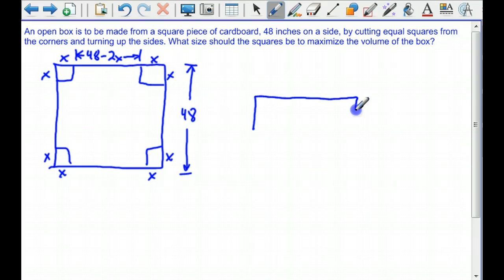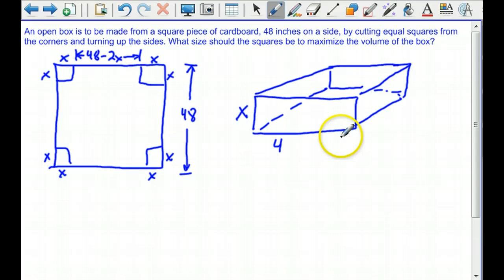If we looked at this box after the sides have been turned up, it's going to look something like this. Our height is x. This edge right here is 48 minus 2x, and this edge along here is also 48 minus 2x.